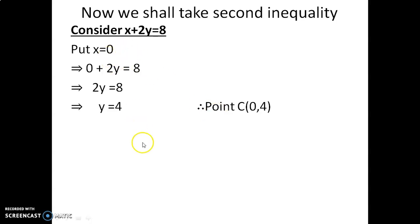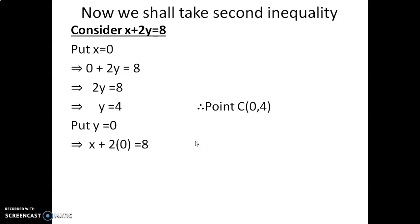The x value is 0 and y value is 4. Next, put y = 0: substituting into x + 2y = 8 gives x = 8. The second point is (8, 0).